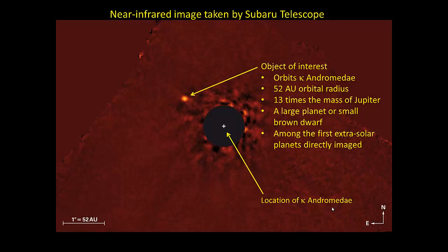And this is one of the first extrasolar planets that's been directly imaged. Usually extrasolar planets are discovered by the gravitational tug that they give on their stars. And it's not usually possible to image them, but in this case it was.